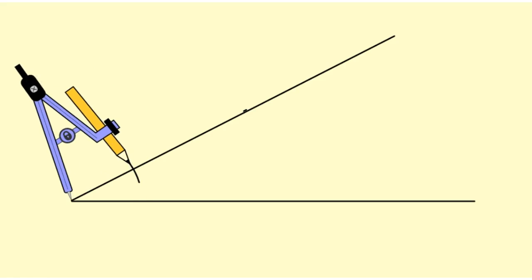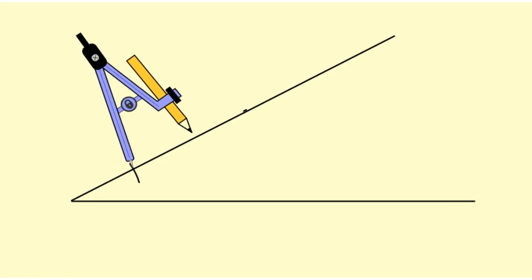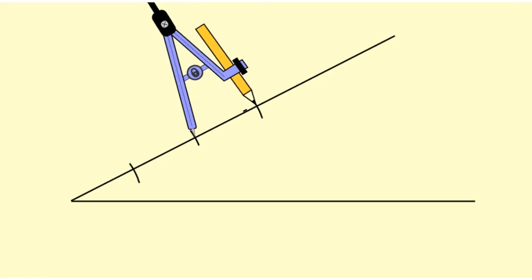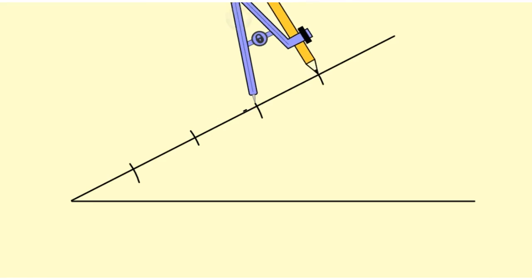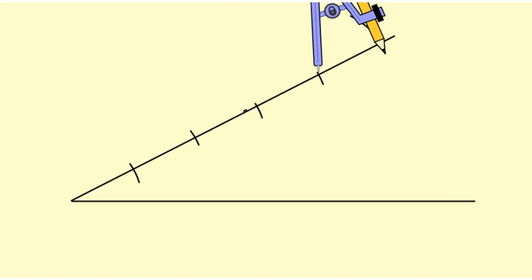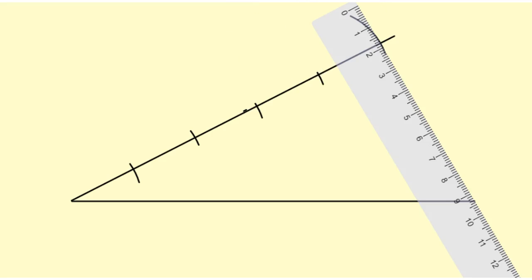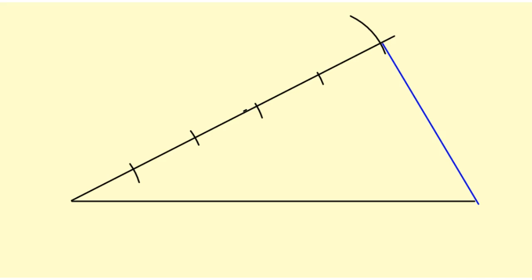Next we connect our last point of intersection to the other end of our segment. What I'm going to do now is construct parallel lines that will basically project these points onto my segment.